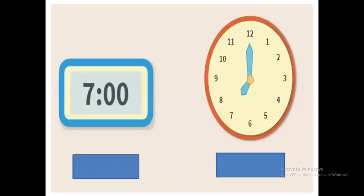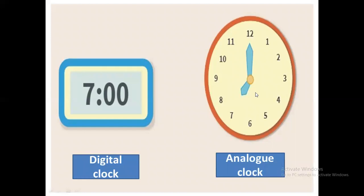First of all, I would like to tell you what these clocks are. Look at these two clocks. This clock has numbers on it from 1 to 12, and this one has only single digits. This one is called the analog clock, and this one is called the digital clock.